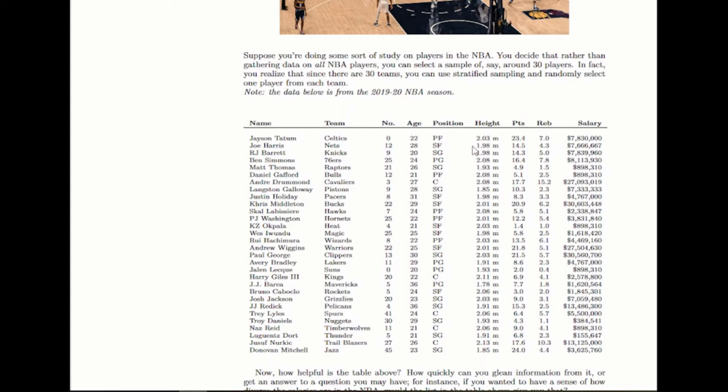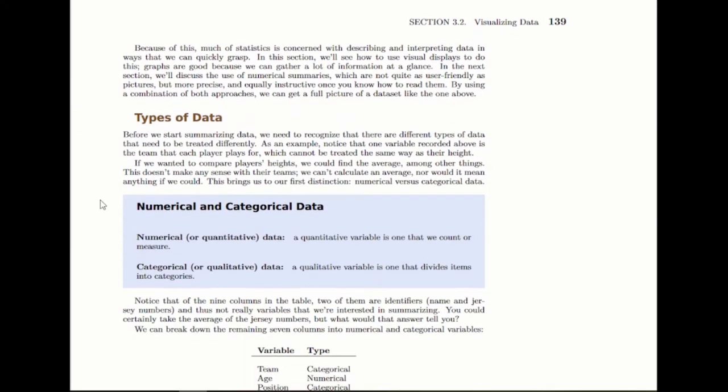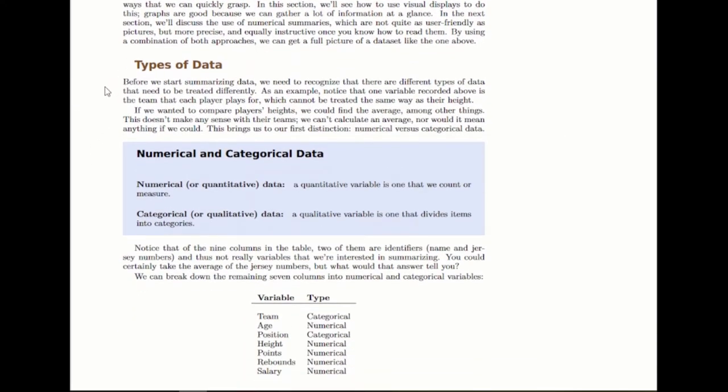I've got an example here with a data set from the NBA, where I've selected out 32 players, or 30 players actually, from the entire league, and I've listed some variables for them. So, using that table, first of all,